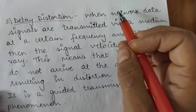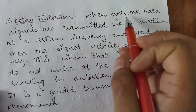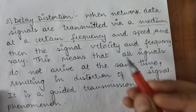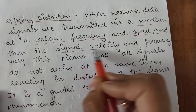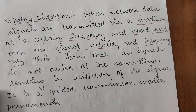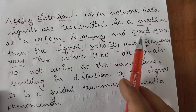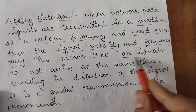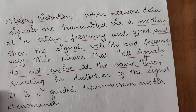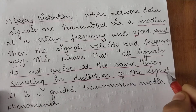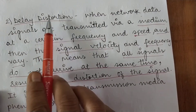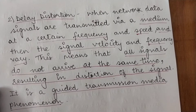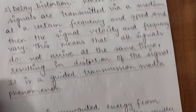Delay distortion occurs when data signals in a network are transmitted via a medium at a certain frequency and speed, and then the signal velocity and frequency start varying. This means that all signals do not arrive at the same time, resulting in distortion of the signal. Delay distortion is basically a guided transmission media phenomenon — it happens only in the case of guided or wired transmission media.